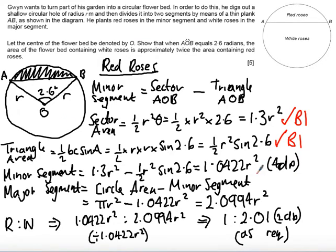Thirdly, if you got the area of the minor segment was 1.0422, there was another standalone mark. There is then a method mark for getting a correct method of finding the major segment. And finally there is an answer mark if there is a convincing argument to show that the major area was twice the minor area. Well I hope my solution made sense and that you followed how to mark that question. Thank you.